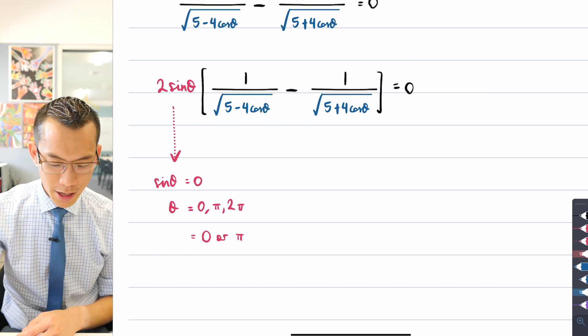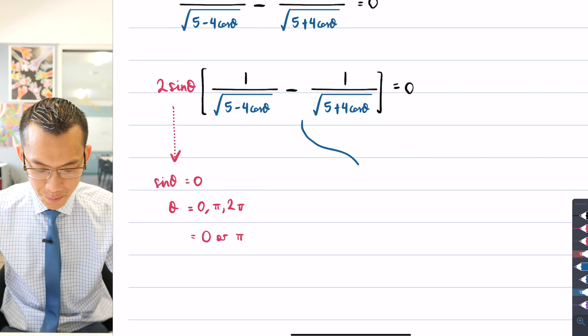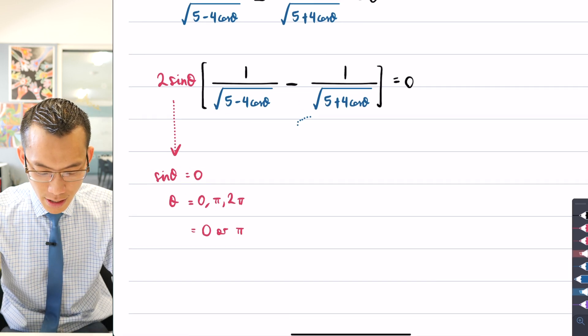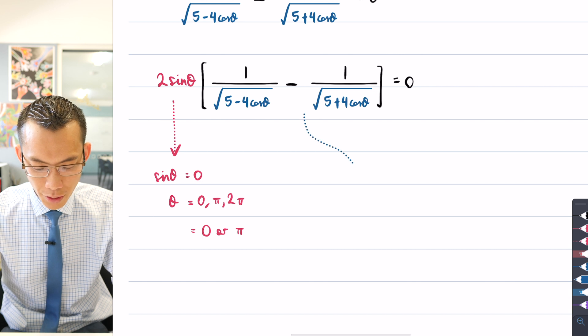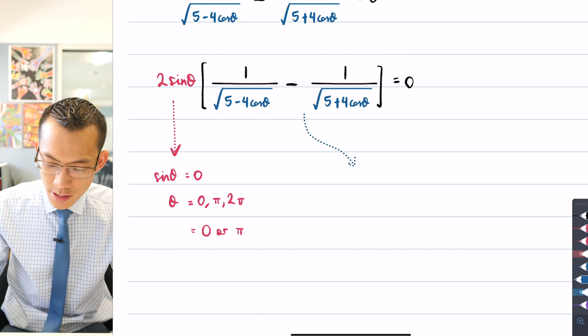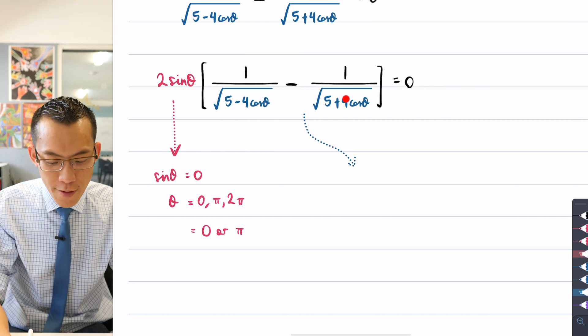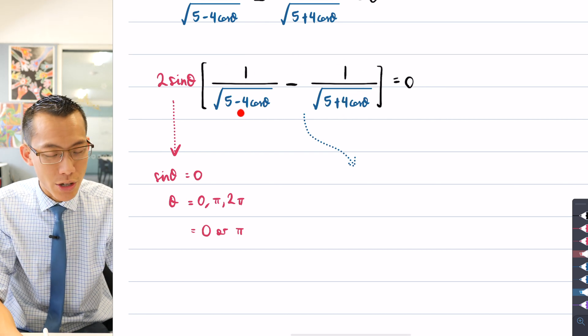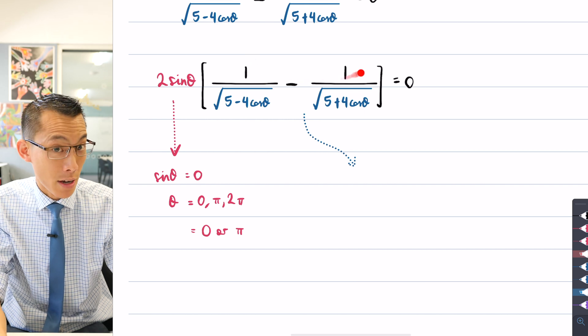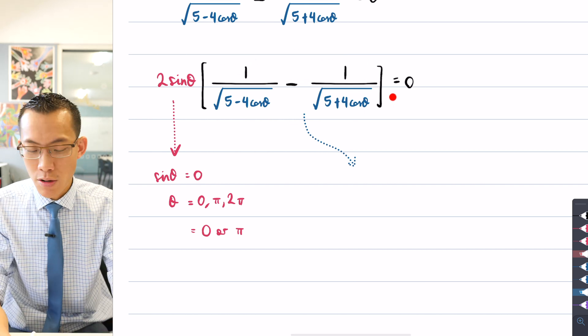I now want to think about this other factor here. This other factor, how do I solve for this? Well, this whole awkward thing here is going to be zero if these two fractions are equal to each other. If I had say like a half minus a half, then this entire awkward factor would equal zero.